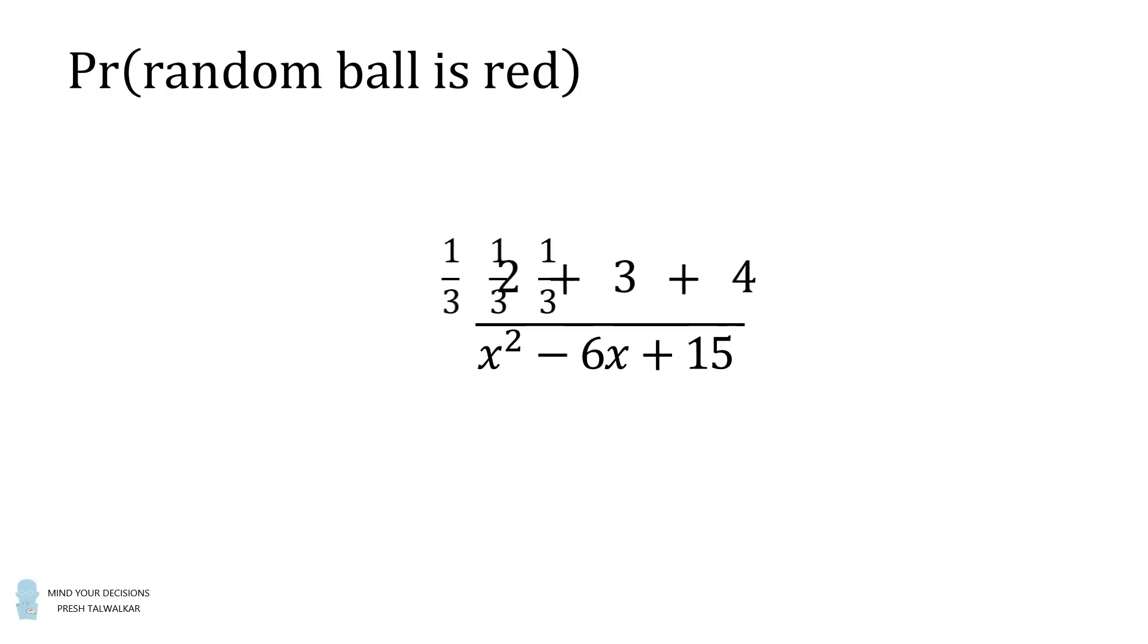From here, we factor one-third. Then 2 plus 3 plus 4 is equal to 9. One-third of 9 is equal to 3.